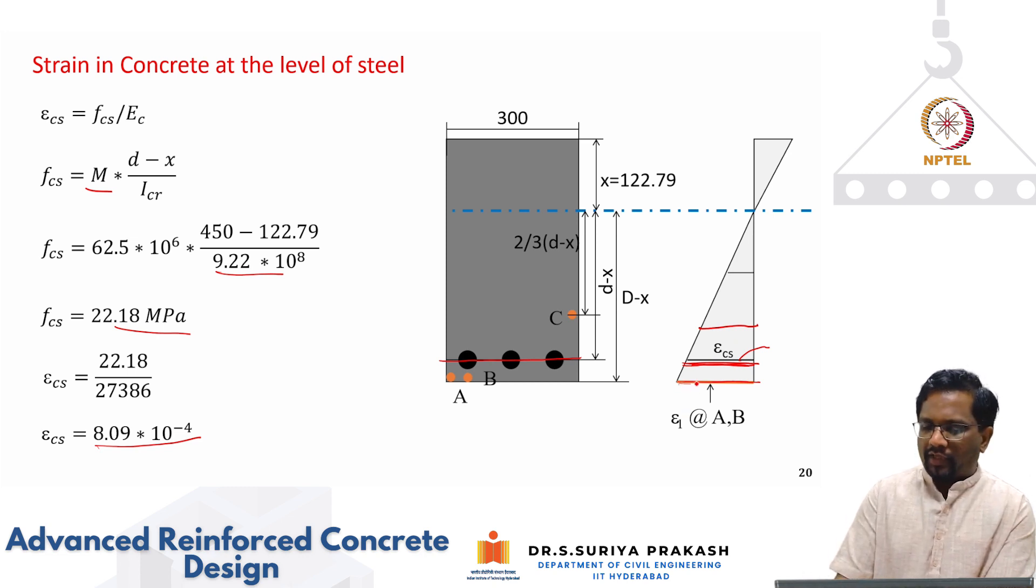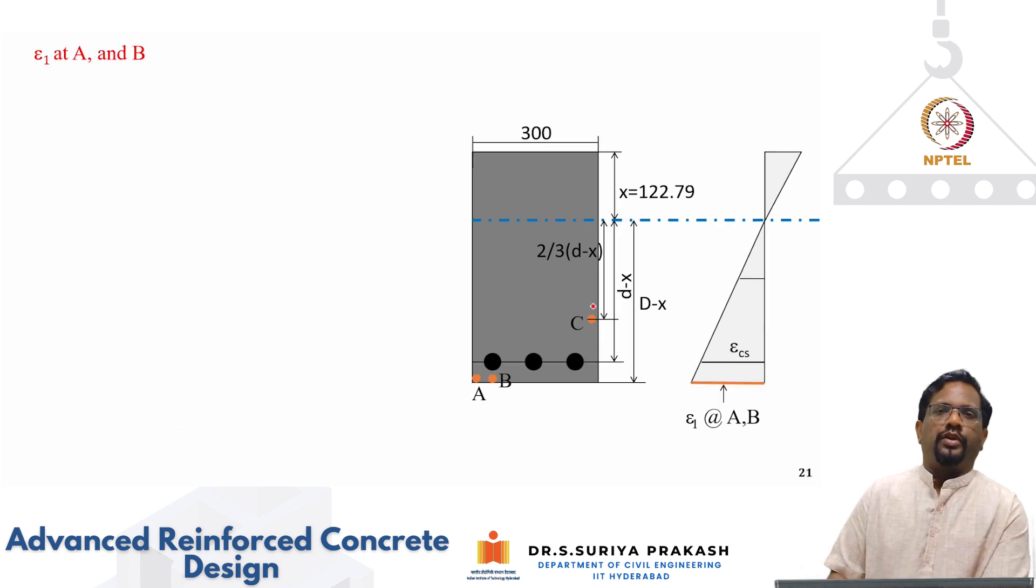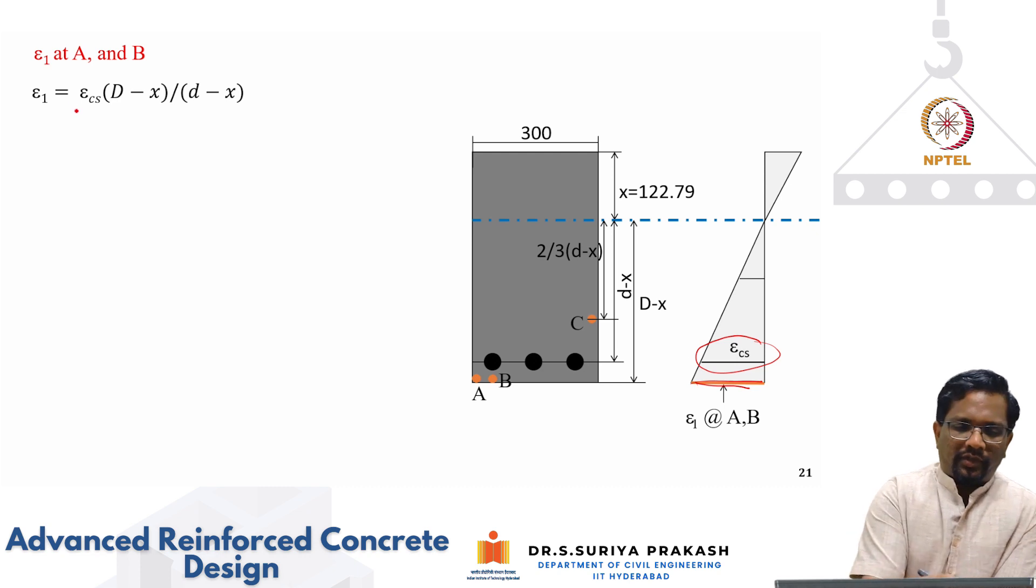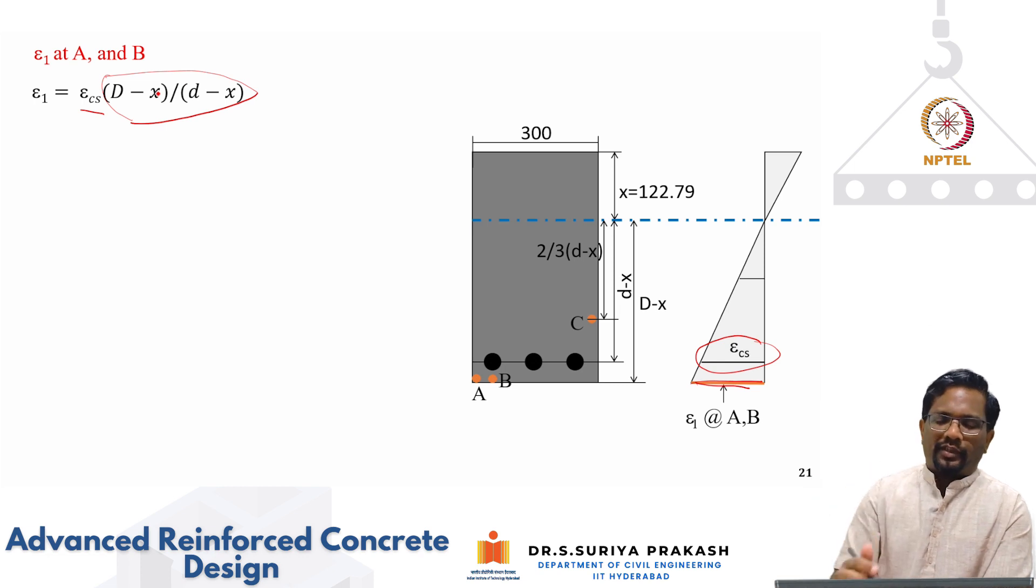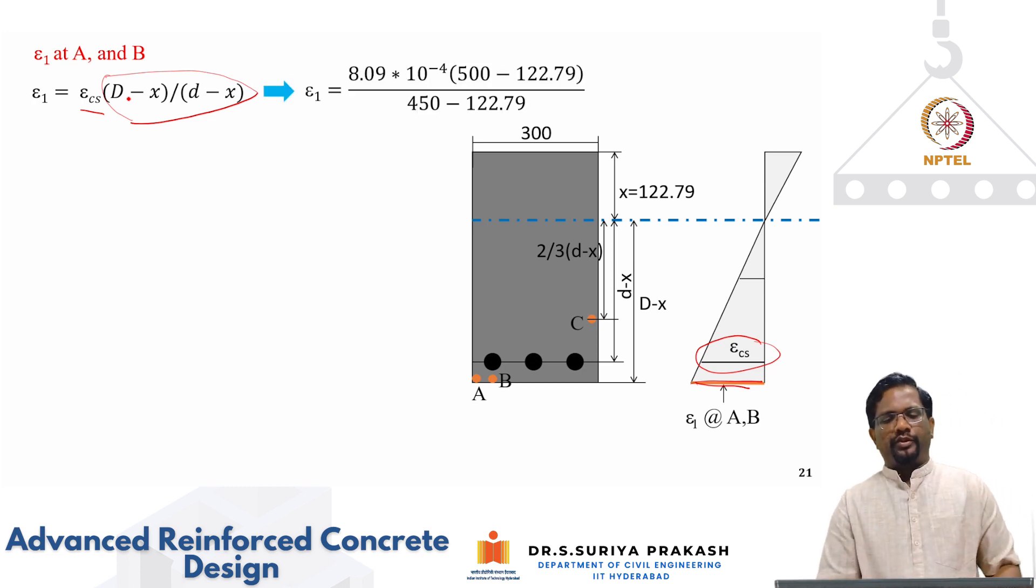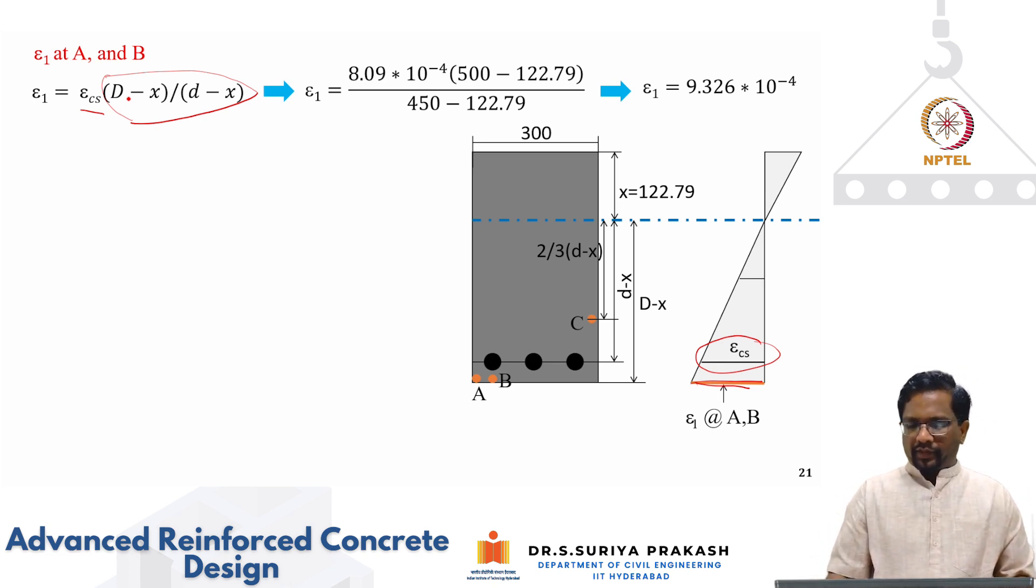I need epsilon 1 at the bottom location and at A and B and C. Let us go ahead and do what is epsilon 1 at A and B. For A and B, then we need to do extrapolation. Epsilon ECS we have calculated. This we have got. I need to find this at A and B. How do we do that? This multiplied by this is your extrapolation factor, which is A minus X by D minus X. In this case, A is equal to capital D. That is the reason D minus X by D minus X. You just simple extrapolation when you do, it is going to be higher value of 9.326 into 10 to the power of minus 4.